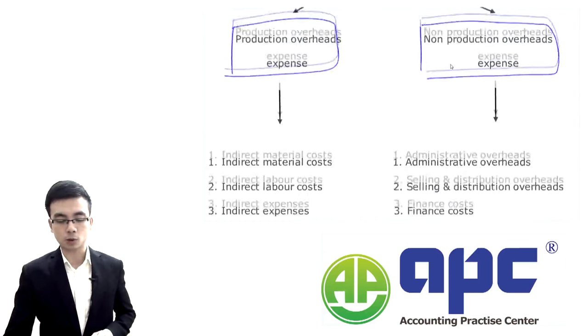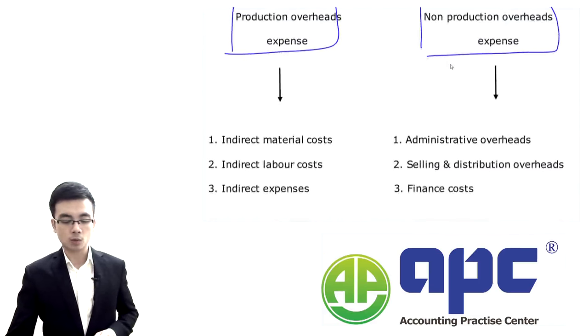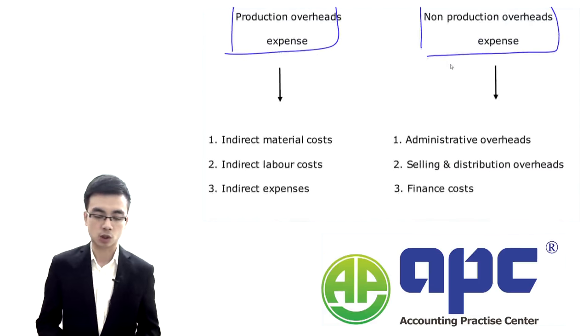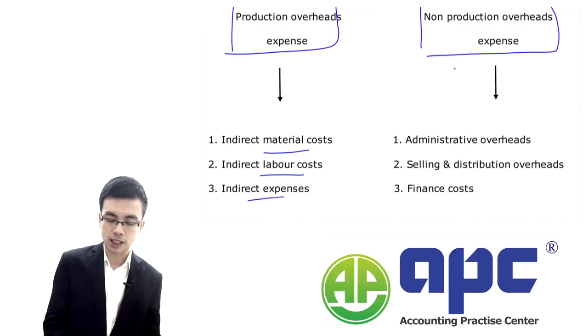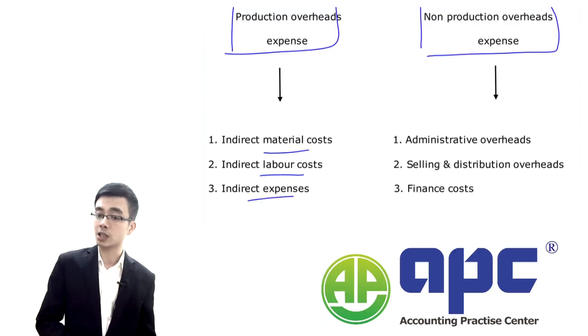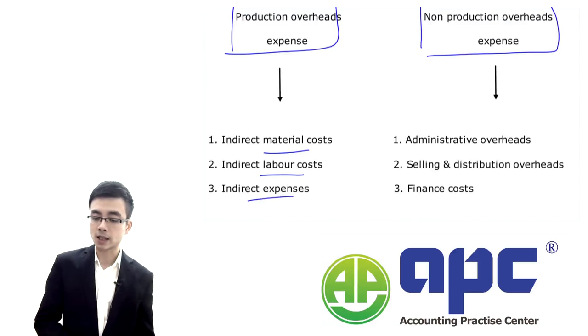Examples of production overheads within the factory include indirect material, indirect labour, as well as other indirect expenses.